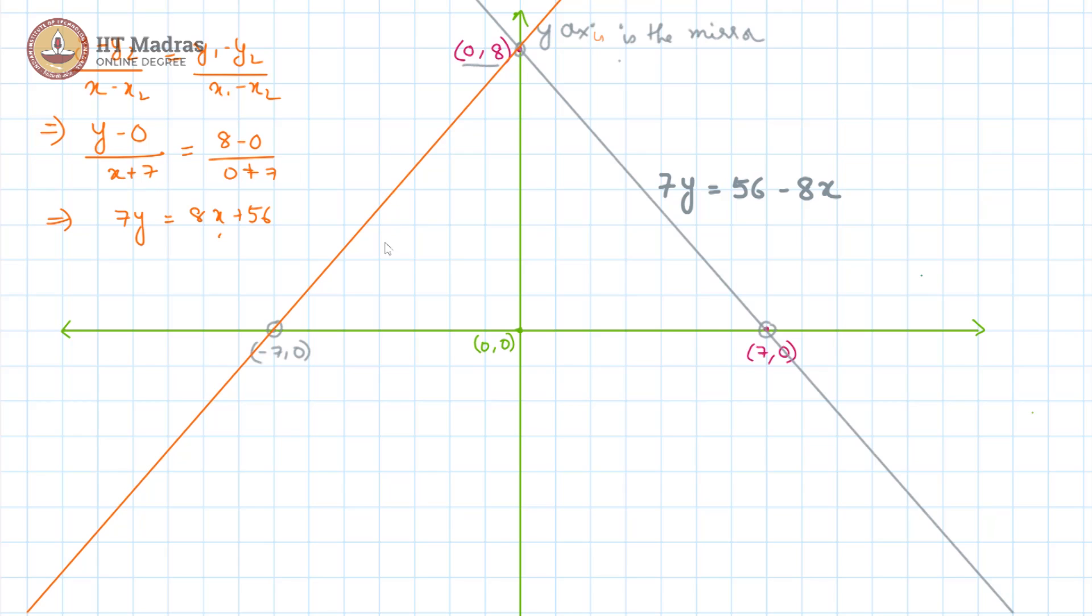So, the mirror image line if you have to write it in the same form as the other one, it will be 7y is equal to 56 plus 8x.